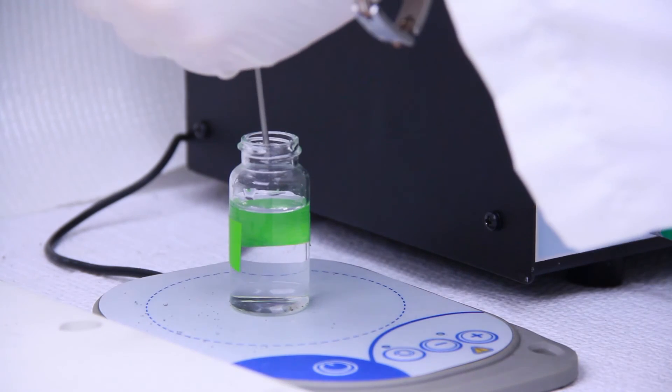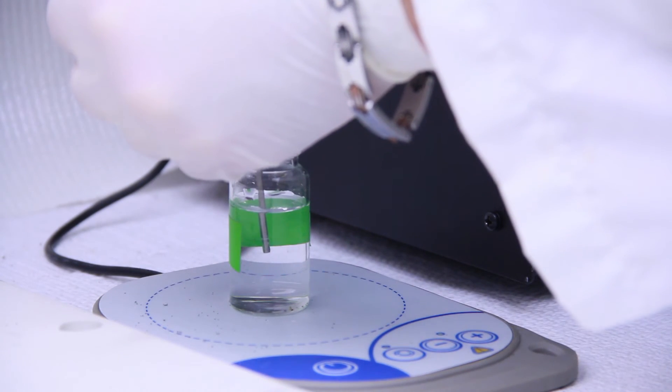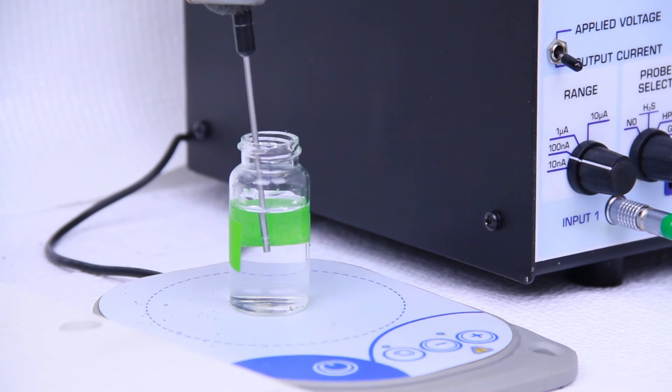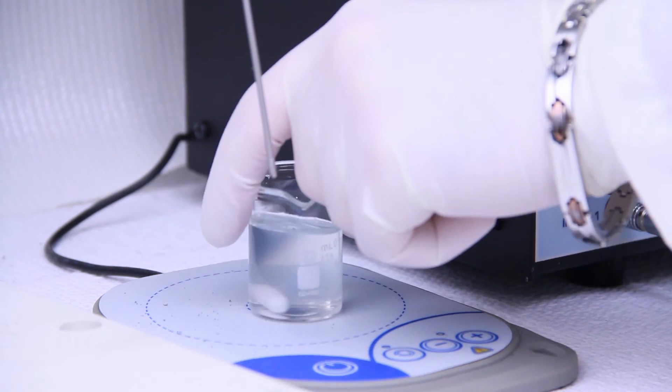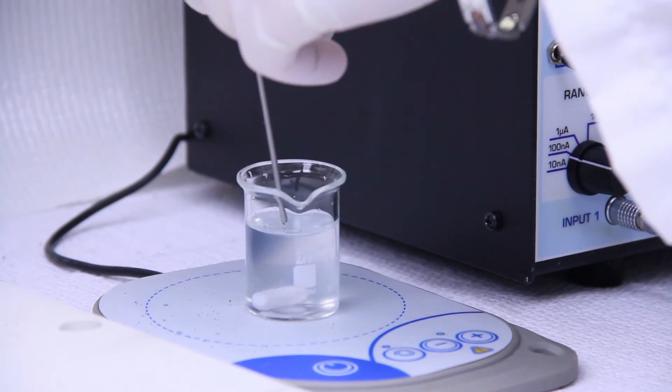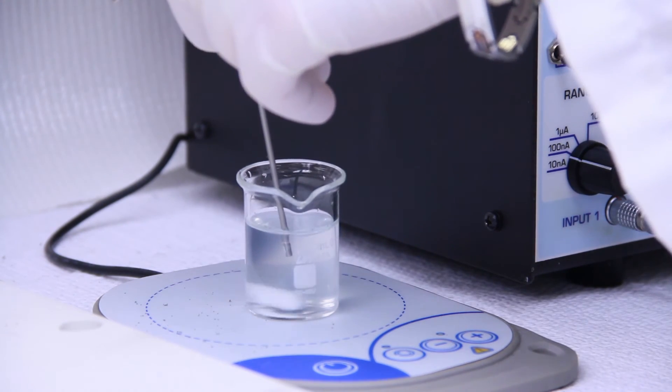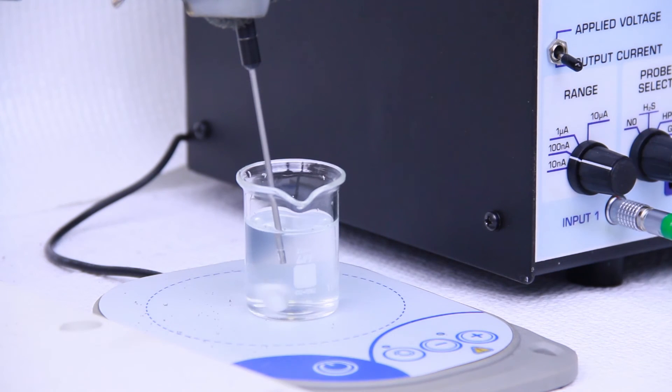Immerse the sensor in the zero percent solution and record the data for five minutes. Now, return the sensor to the 20.8% solution for five minutes and record the data. The oxygen measurements should return to the baseline value.